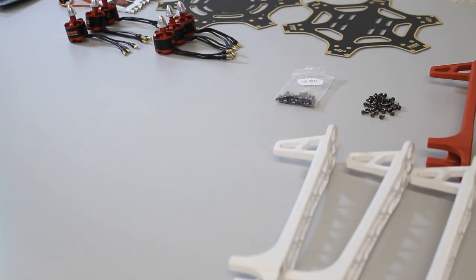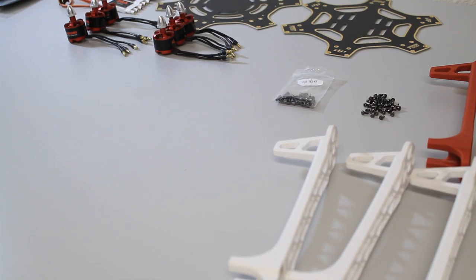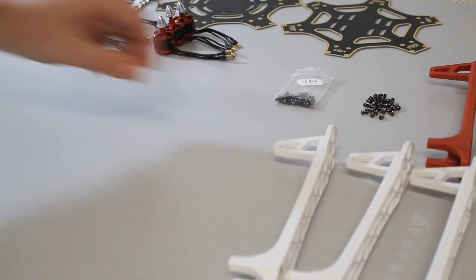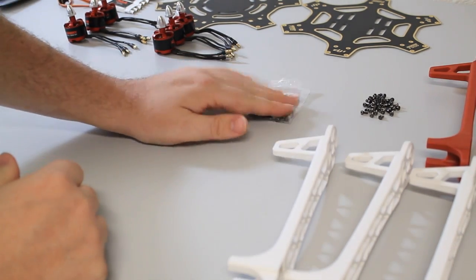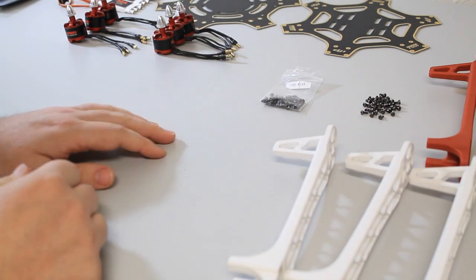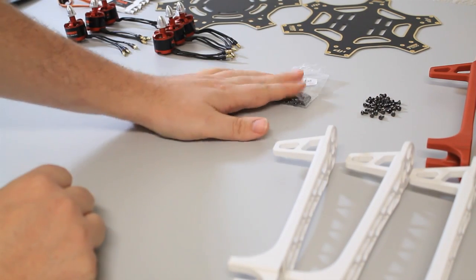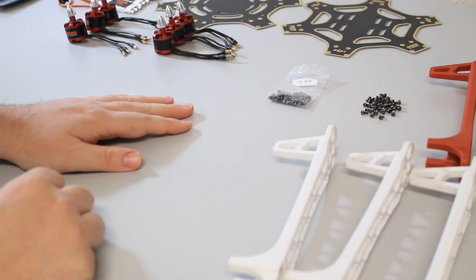All right, the first thing you're going to do is I like to mount the motors to the arms. For that, we'll use the M3 screws. You have M2.5 for most of the frame stuff, and then the M3 are going to be used to mount the motors to the arms.